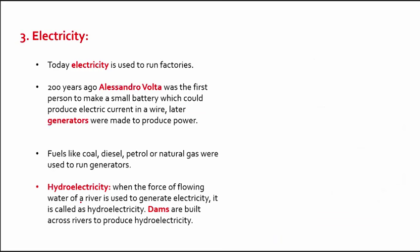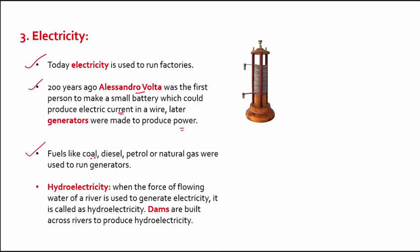The third source of energy is electricity. Today, electricity is used to run factories. Nearly 200 years ago, a person called Alessandro Volta was the first to make a small battery which produced electric current in a wire, and later generators were made to produce power. Apart from this, we also use fuels like coal, diesel, petrol, or even natural gas to run generators.